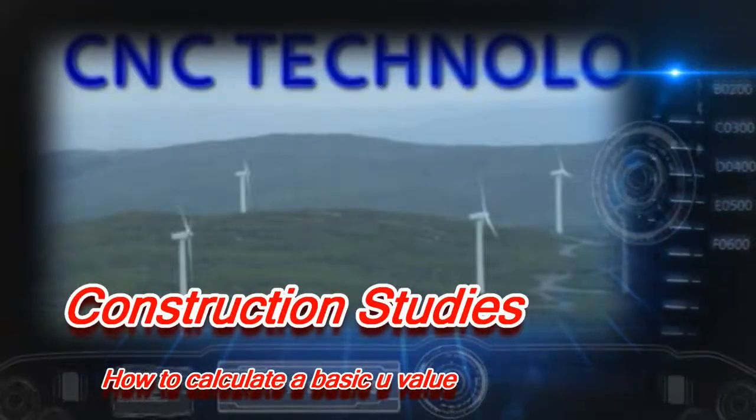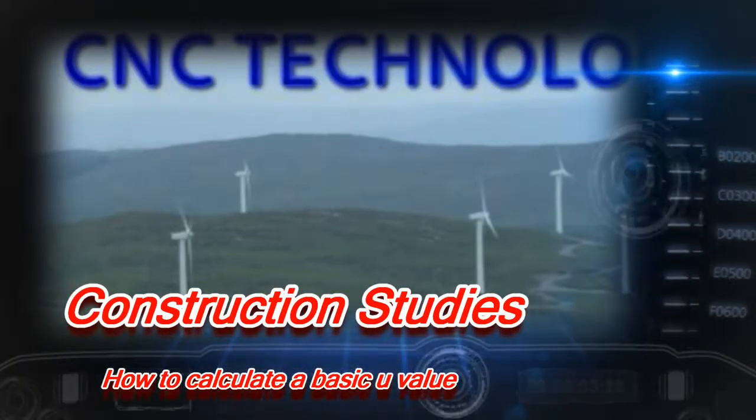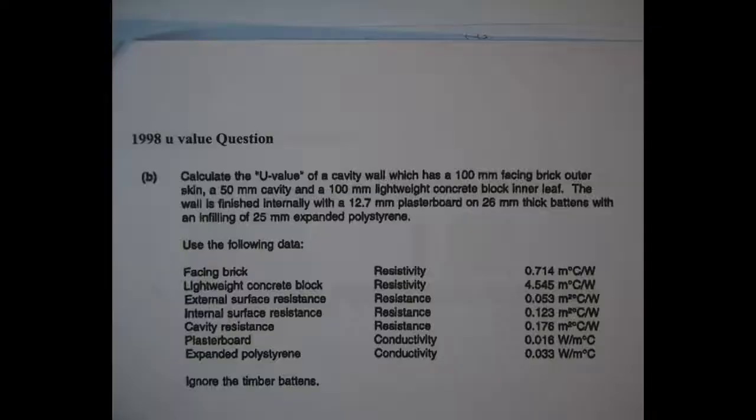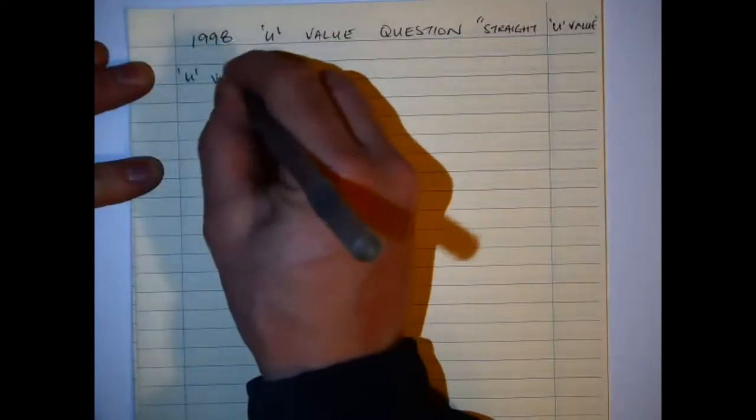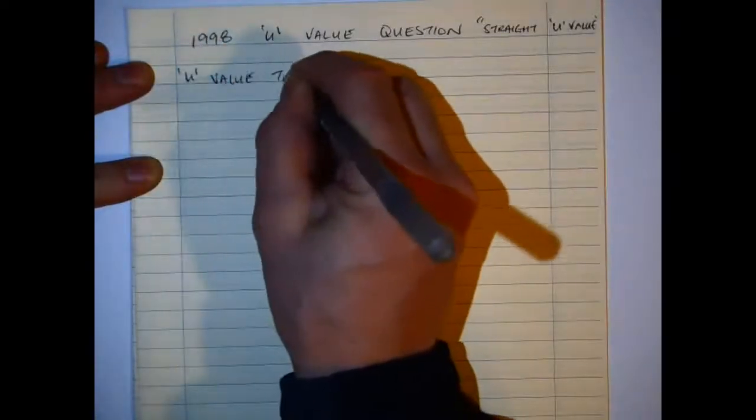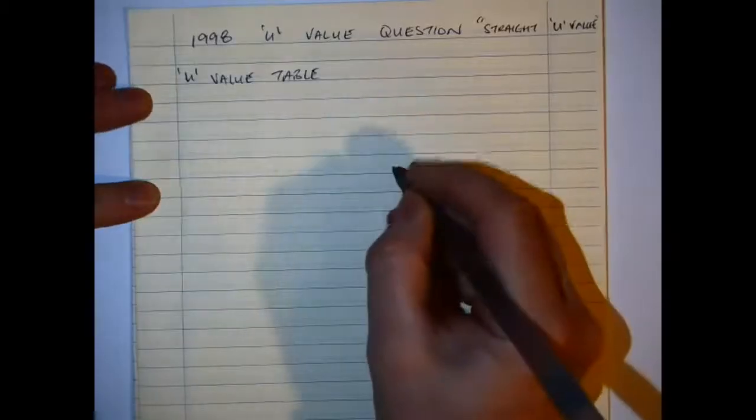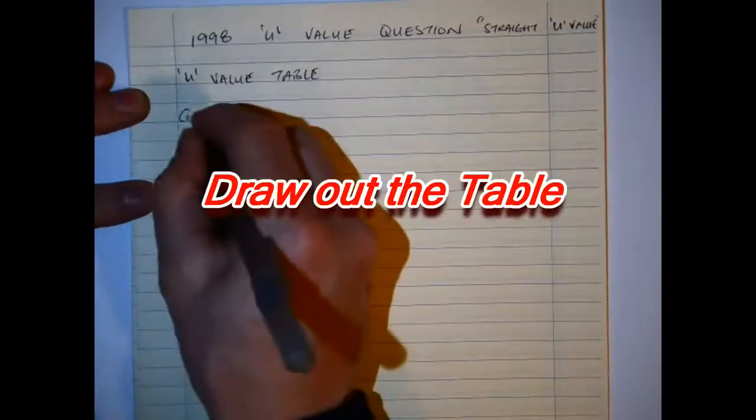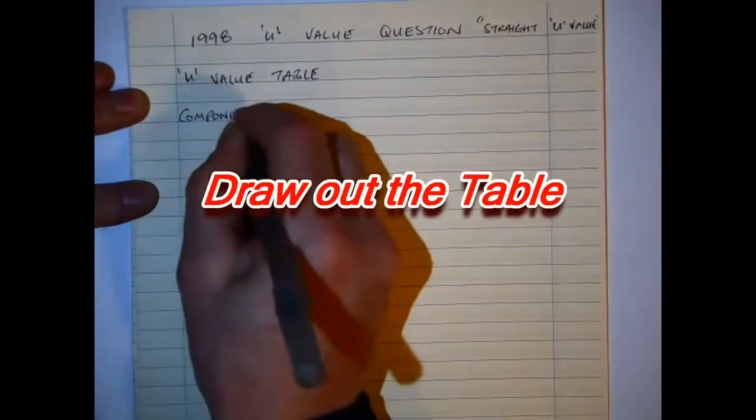In this video I'm going to take you through what we need to do to calculate a basic U-value. We're going to look at a question here from 1998, quite a while back now, but this contains all the details that we've been referring to as we go through this question. So the U-value - first of all, any U-value you always set out by drawing a U-value table, that's the first thing that you'll do.